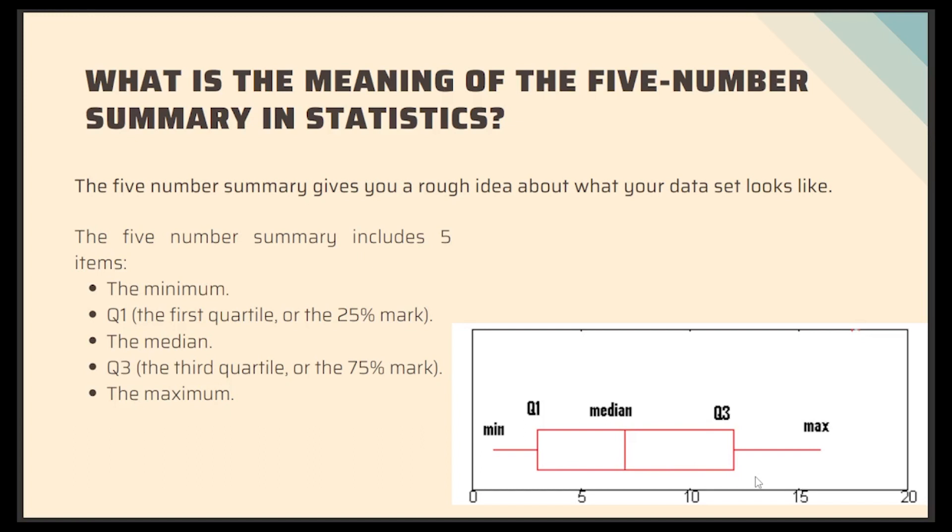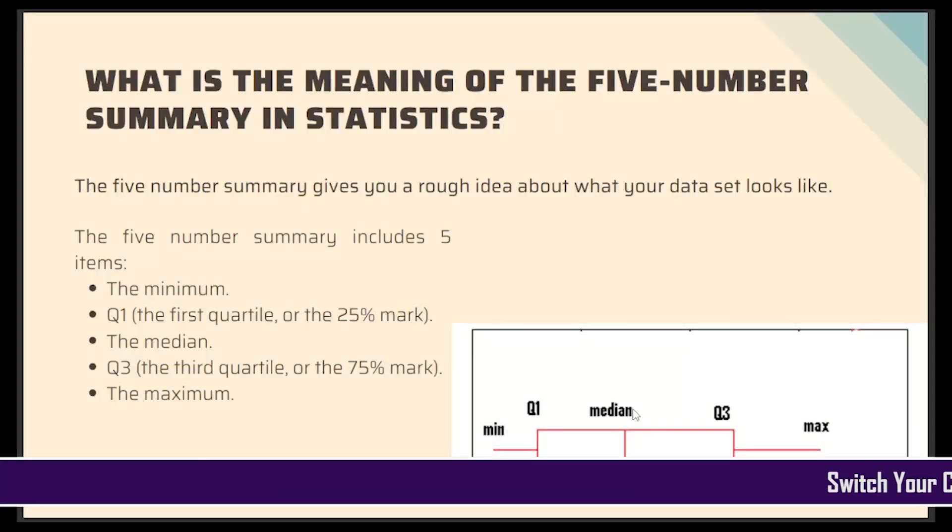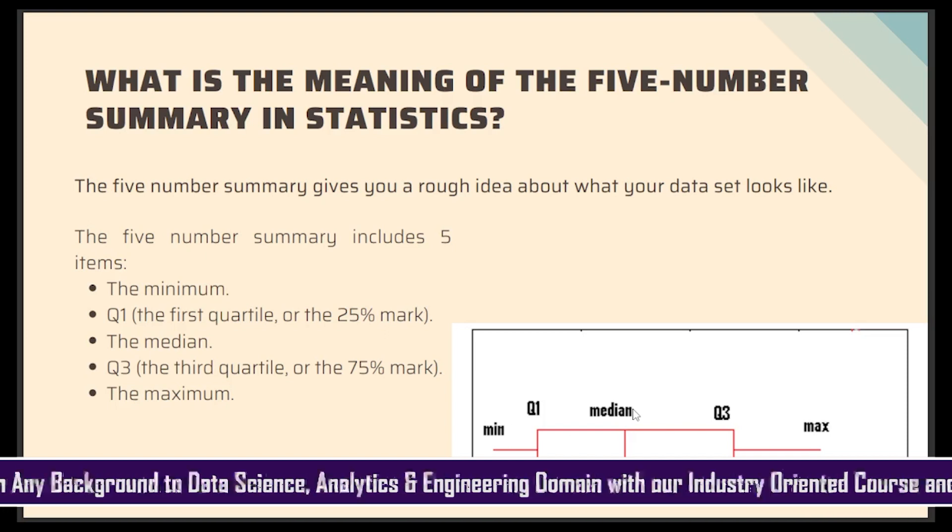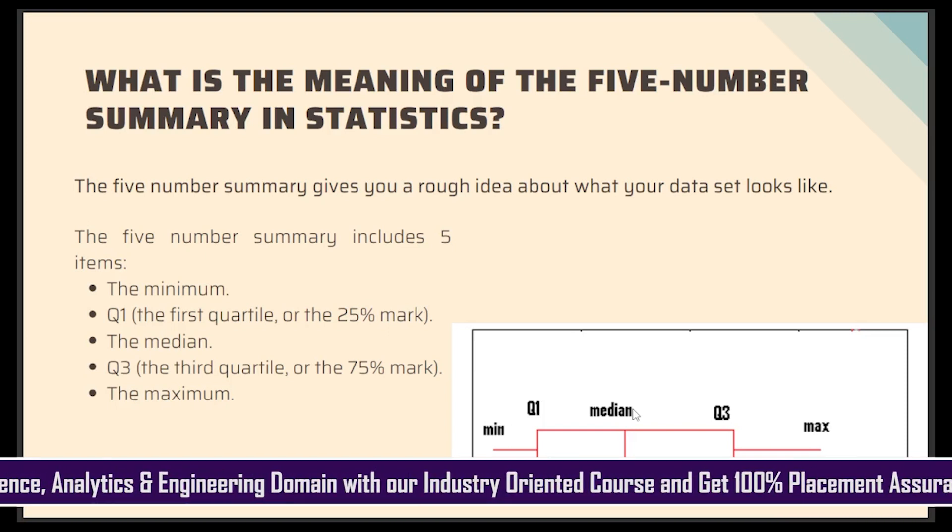And also similarly suppose this is Q1, the 25% mark. So it will tell us what is the 25th percent of the entire data. Similarly for the median, it will give you the middle most value. So this can be used for preliminary investigation of the data to get a rough idea about what the data looks like and also to identify skewness in the data. So these are the uses of the five-number summary in statistics.